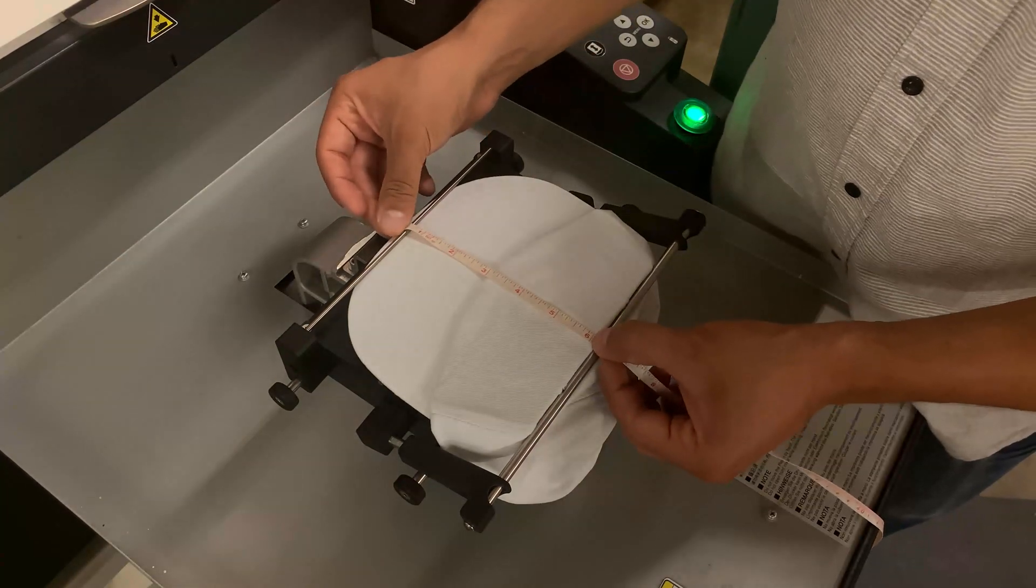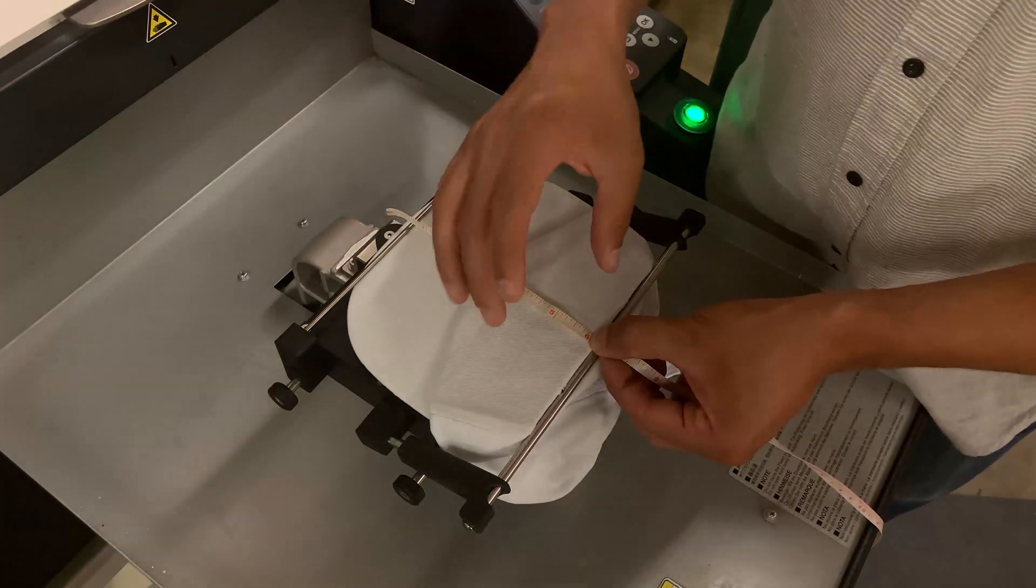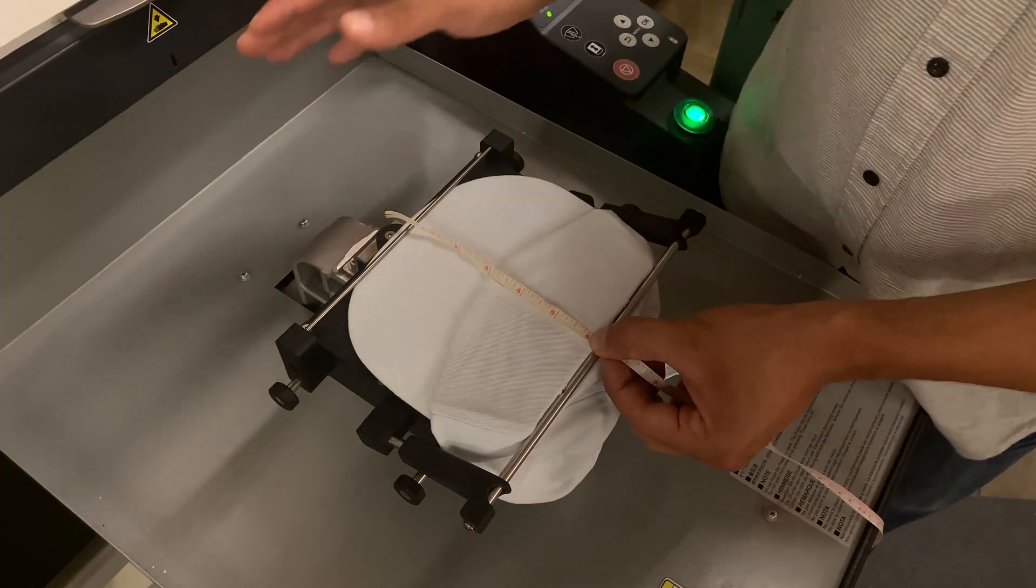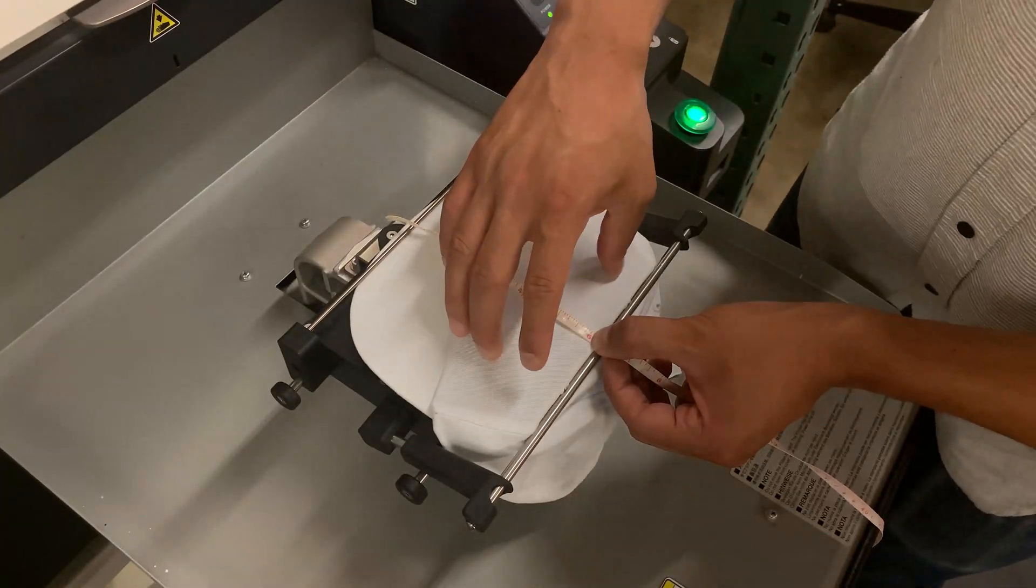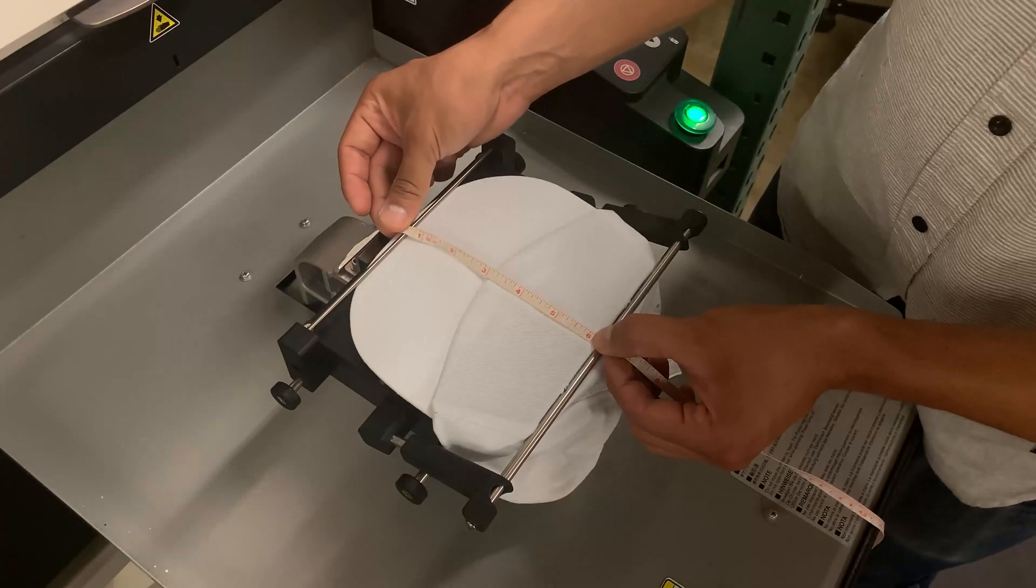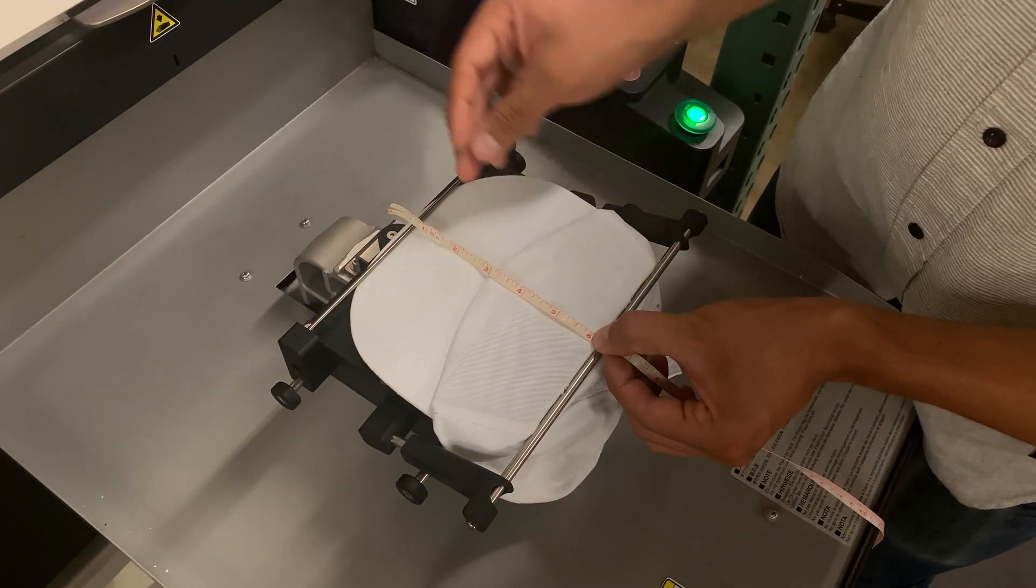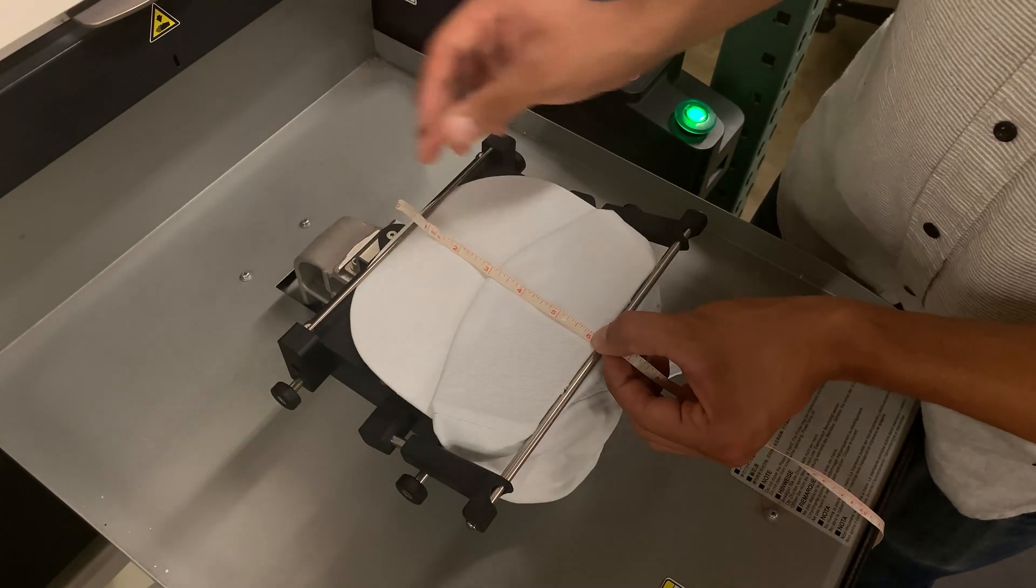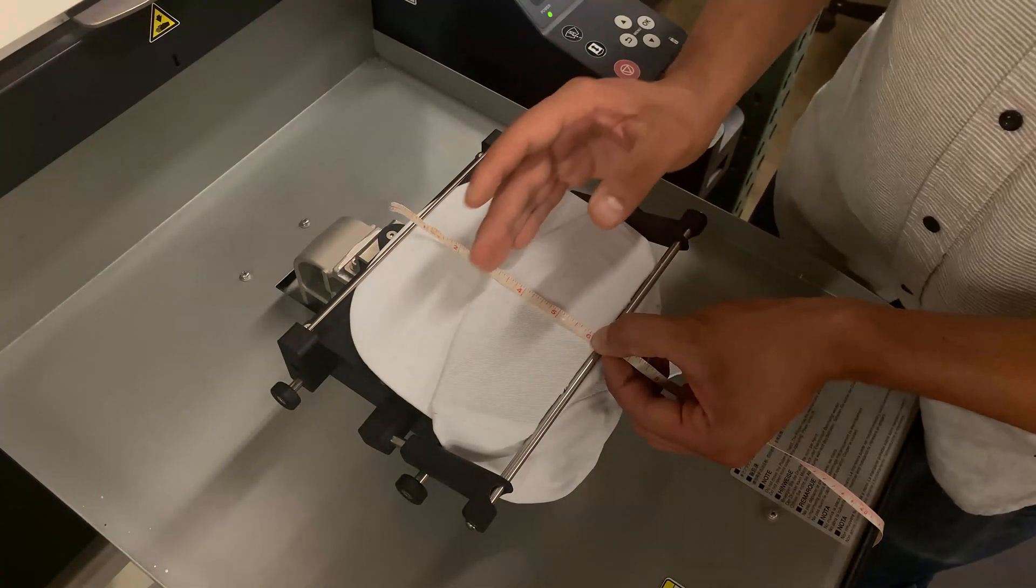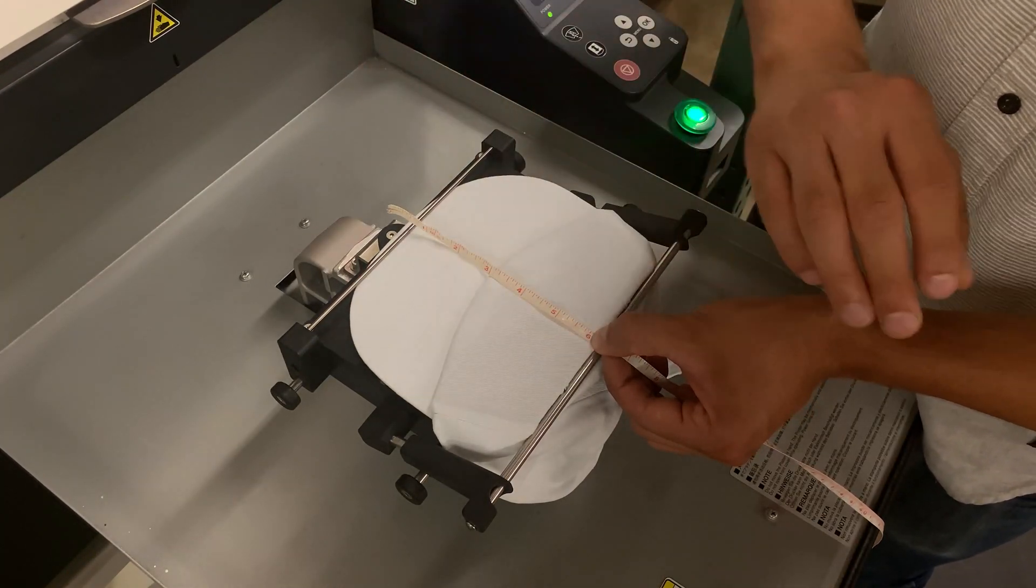Now say for example that you print the hat and you maybe want it a little bit lower or you want to make the artwork a little bit bigger, that's completely fine because in the software you can make the image a little bigger. Now if you wanted to move it down a little bit, say three and a half inches from the bottom, all you would have to do is move it a little bit closer to the three and a half inch mark in the software and you're ready to go.